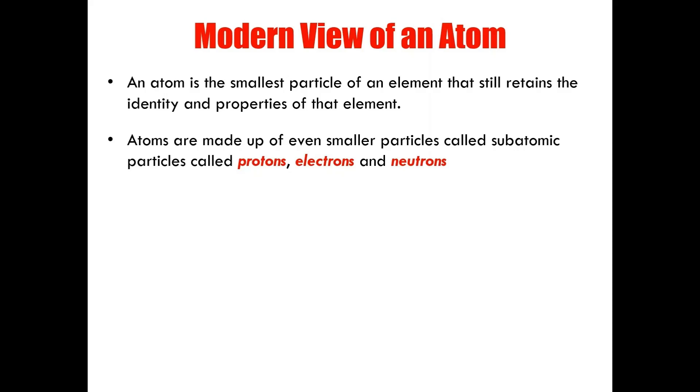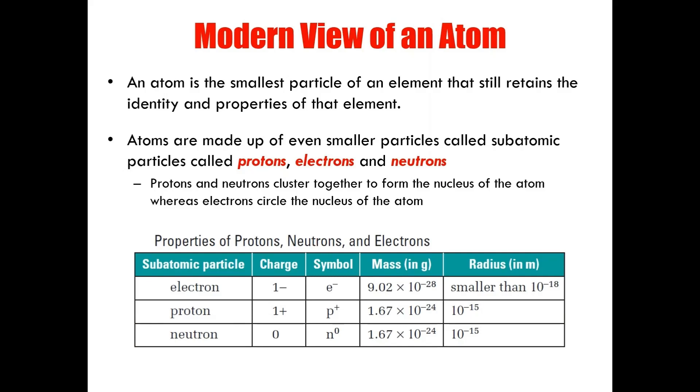We know them as protons, electrons, and neutrons. Protons and neutrons cluster together to form the nucleus of an atom, whereas electrons circle around the nucleus in fixed positions. This table provides a great summary of these subatomic particles. We know that electrons have a one negative charge. We also know that protons have a one positive charge, and that neutrons have no charge. The symbol for an electron is E negative, a proton, P positive, and a neutron, N naught. And a naught is basically just a zero as a superscript.